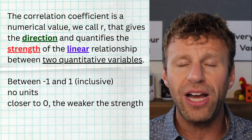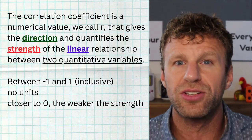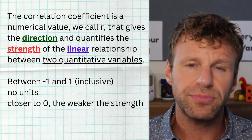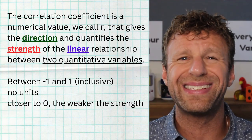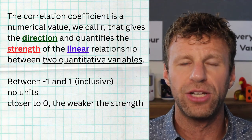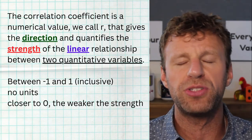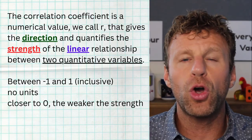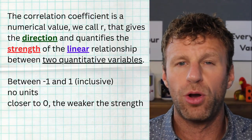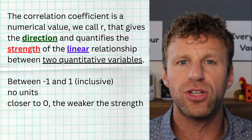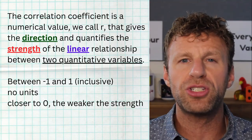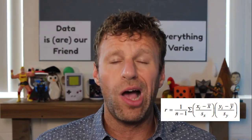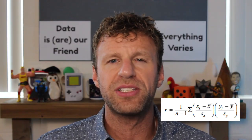Correlation measures direction because it can be positive or negative. Positive means the direction of your data is going up; negative means it's going down. Correlation is guaranteed to be a number from negative one to positive one, inclusive. Negative one means a perfect negative straight line; positive one means a perfect positive straight line. The closer to zero, the weaker the relationship; the closer to negative one or positive one, the stronger. There are no units on correlation either. The formula is quite complex, but on the AP exam you're usually given the correlation or can find it using technology.